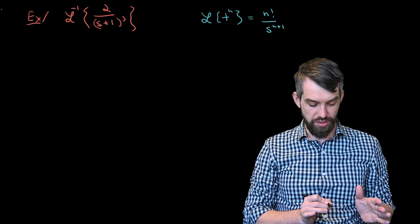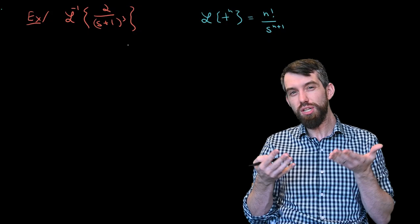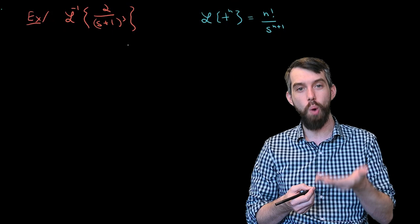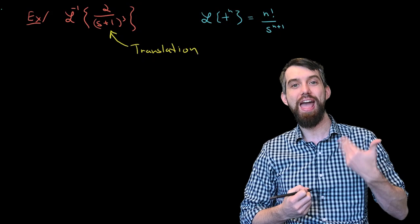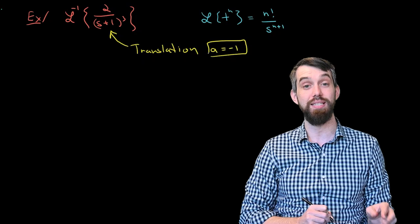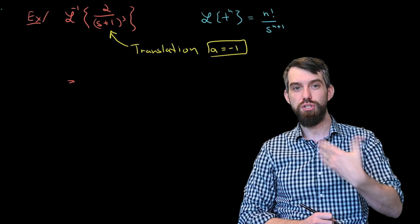If I look at 2 over (s+1)³, it looks a lot like n!/s^(n+1) with n equal to 2, except there's an (s+1) in the denominator instead of s. In other words, there's a translation — it's no longer a function of s but a function of s minus a, where a equals minus 1, because s+1 equals s minus (−1). And 2 factorial with n equal to 2 gives me 2, which matches the numerator.